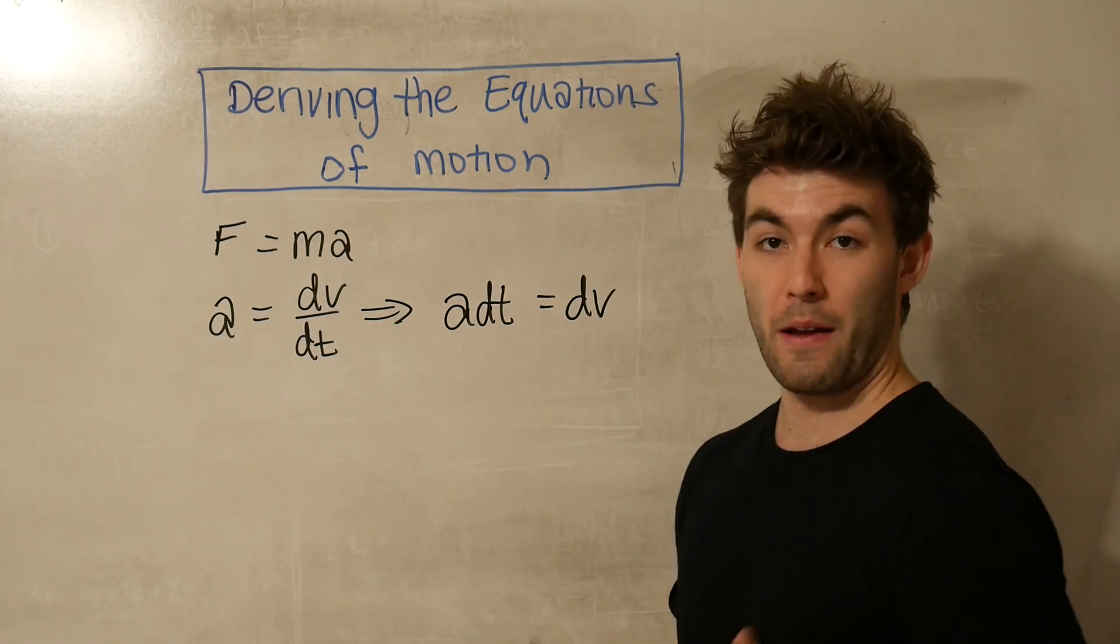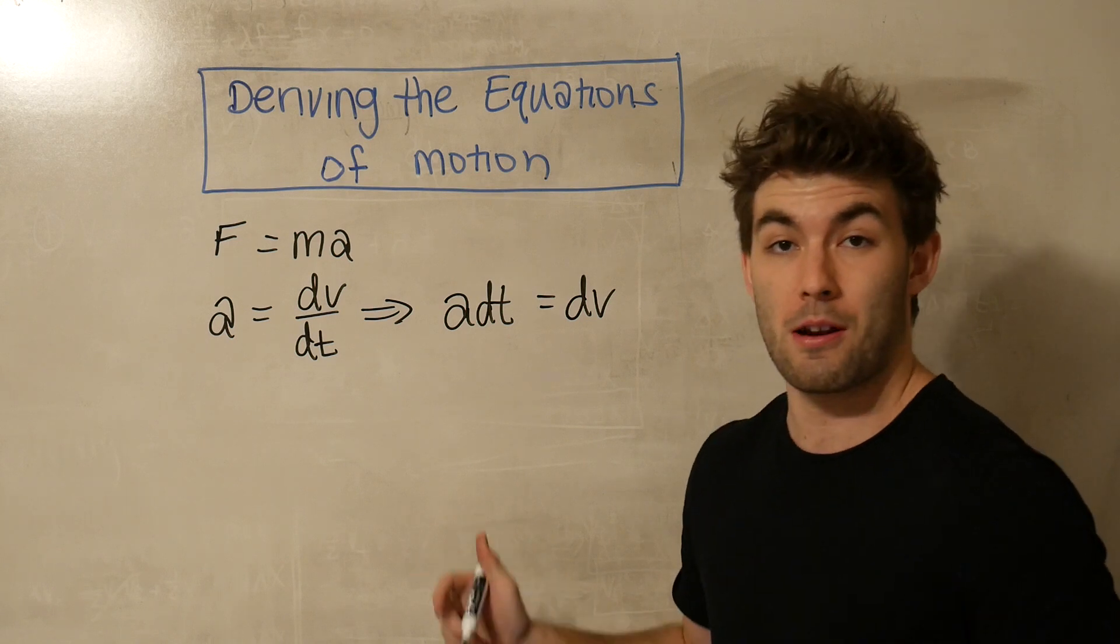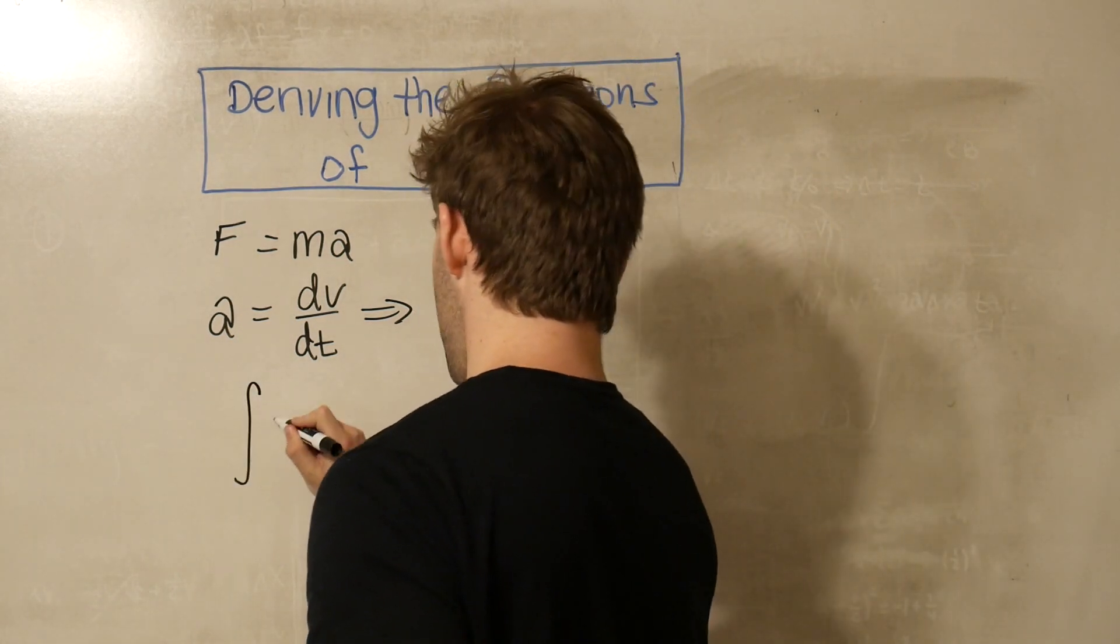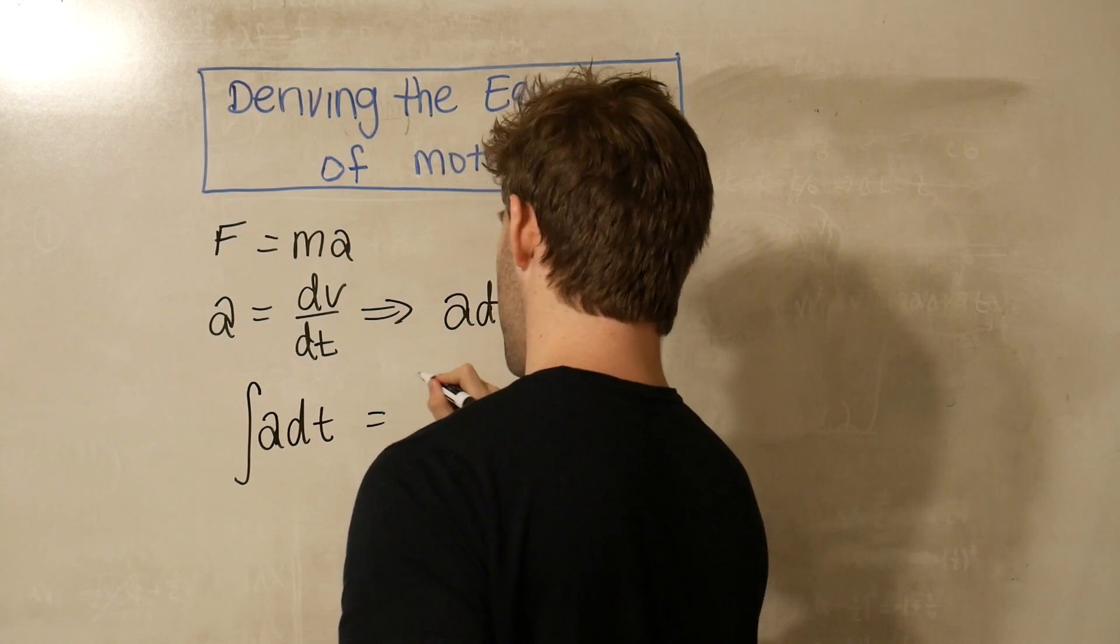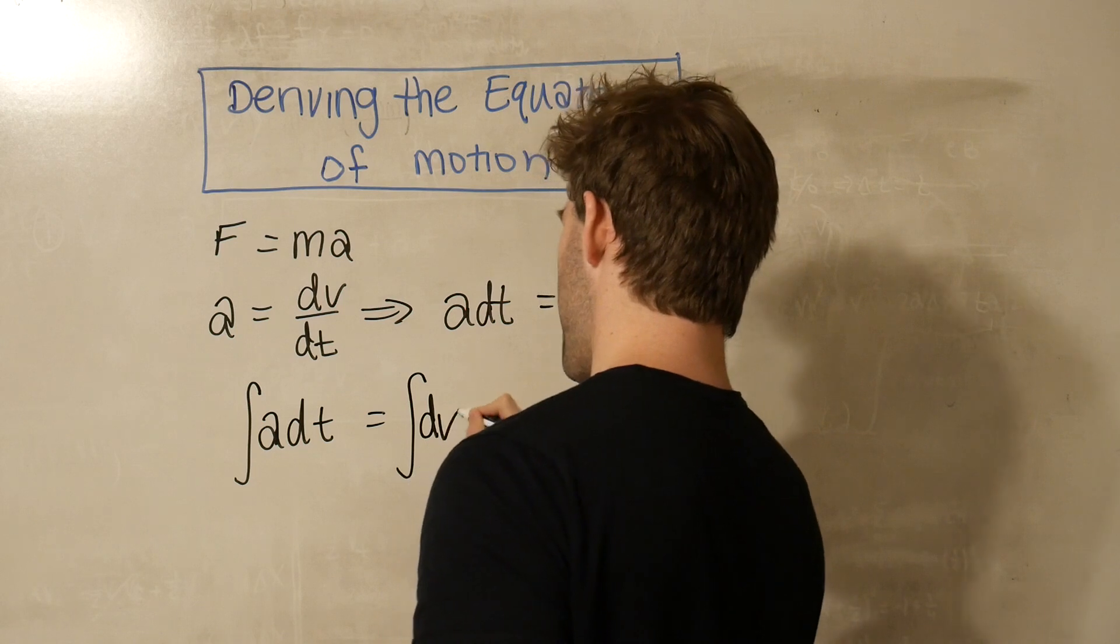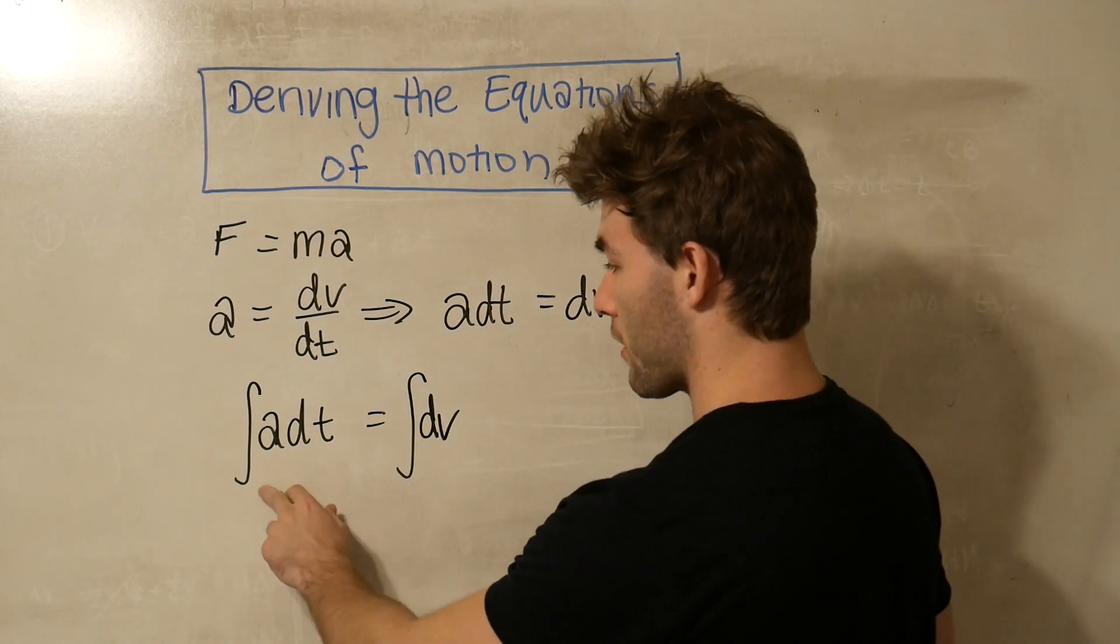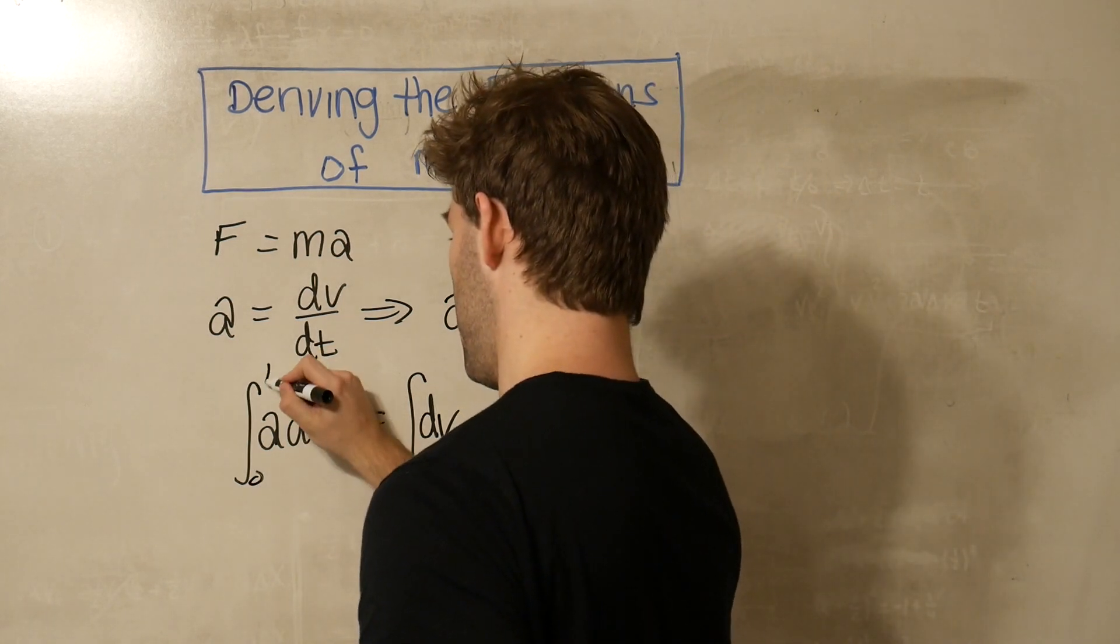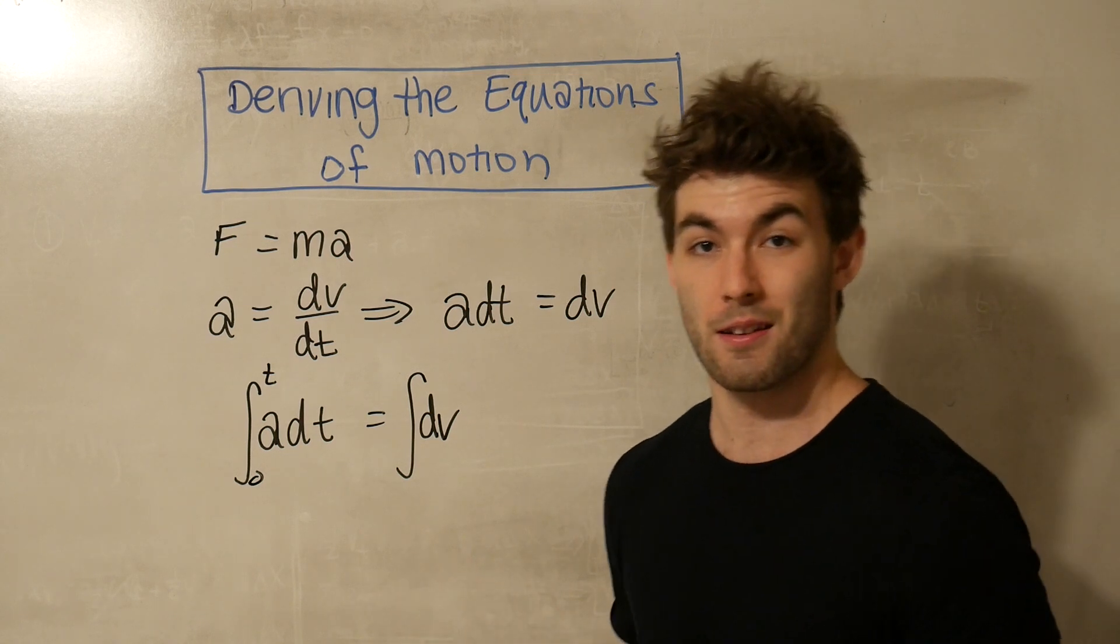Now, this is a very approachable differential equation that we can solve if we just integrate both sides, and that's what we're going to do. So if we take the integral of a dt, that's equal to the integral of dv. And our limits of integration that we're going to place on this system is we're going to go from zero to some time t, and for the dv, we're going to go from some initial velocity to some final velocity.